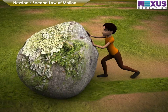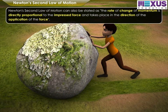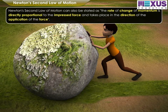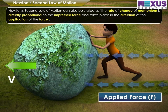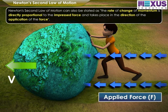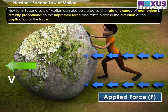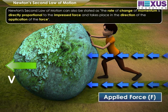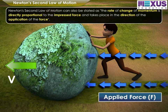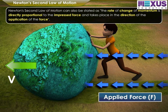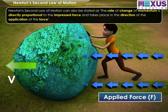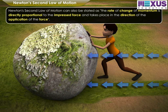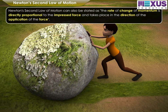The SI unit of momentum is kilogram meter per second. Thus, Newton's Second Law of Motion can also be stated as: the rate of change of momentum is directly proportional to the impressed force and takes place in the direction of the application of the force.